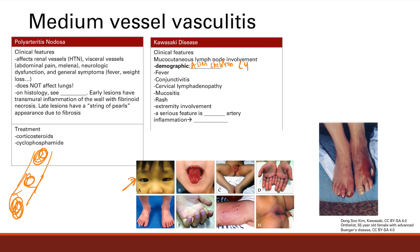Symptoms include fever, conjunctivitis with red eyes, cervical lymphadenopathy, and mucositis — the lips are red and inflamed, and the tongue is red and inflamed, which is called strawberry tongue. You can have a rash that is initially polymorphous and splotchy, then becomes desquamating with skin peeling. There is also extremity involvement — erythema and edema of the hands, and skin peeling.